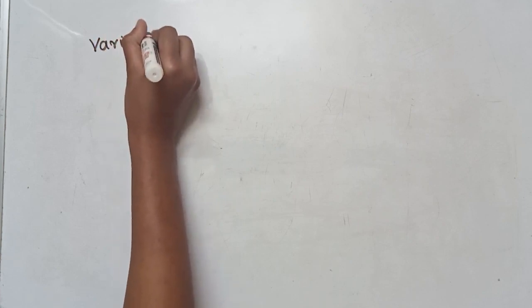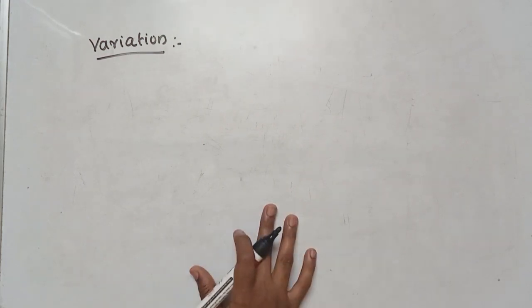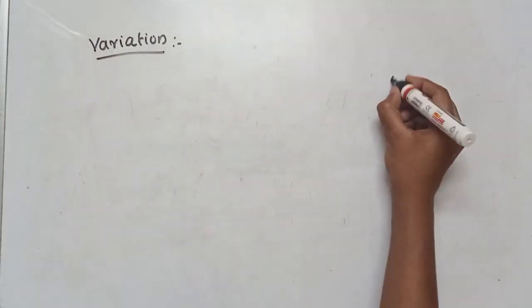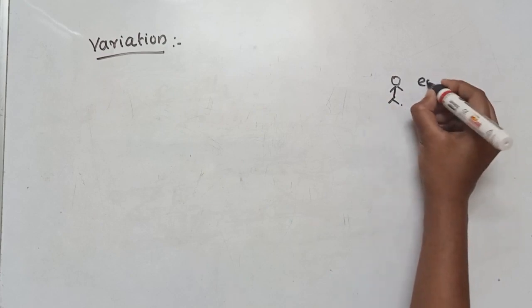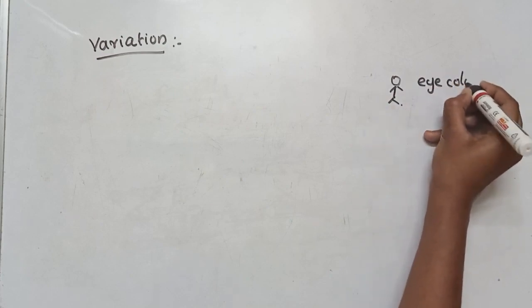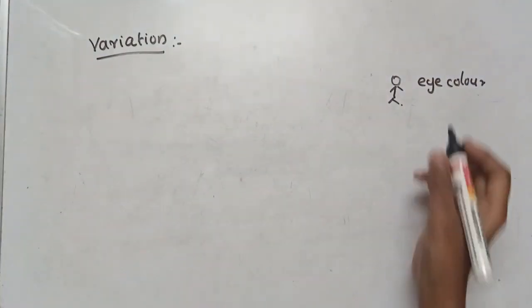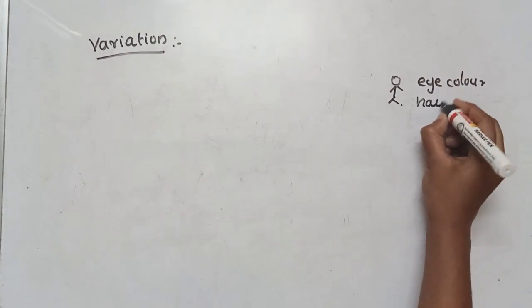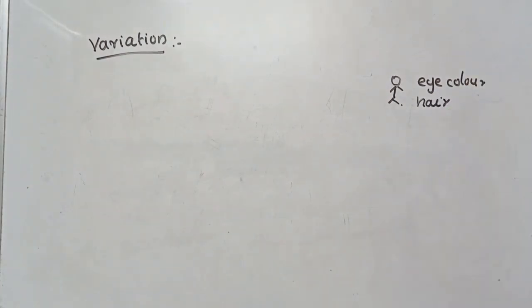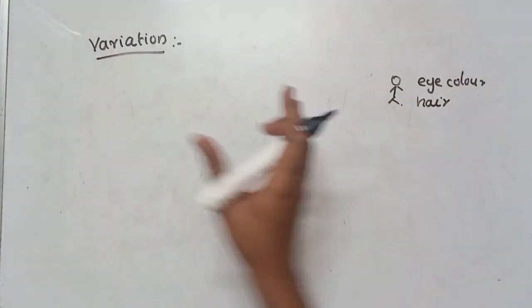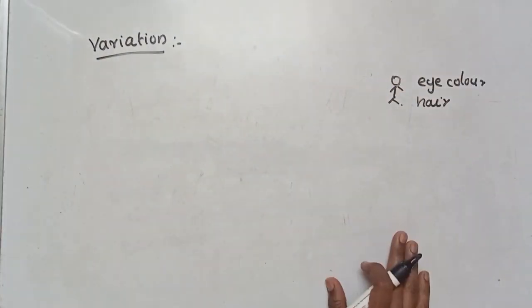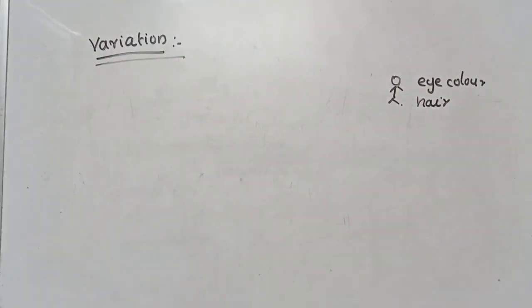Now, if we learn more about variations — what is variation? We are looking at human beings. All individuals can have different eye colors: black eye, brown eye, blue, green, etc. We are also looking at hair color, hair type — curly hair, straight hair, wavy hair. These are all characters.